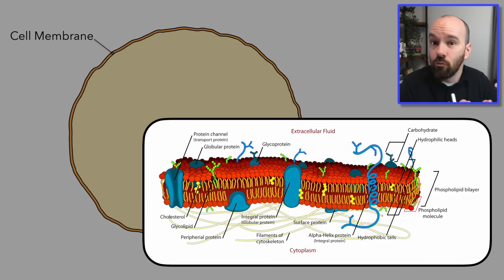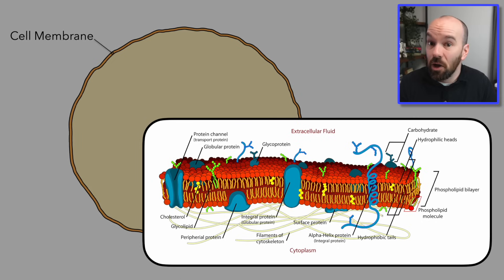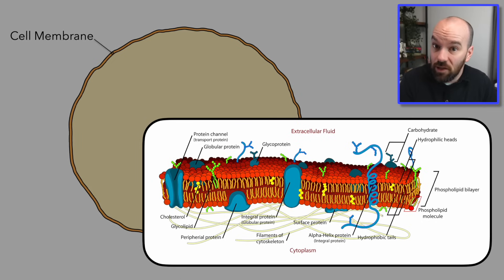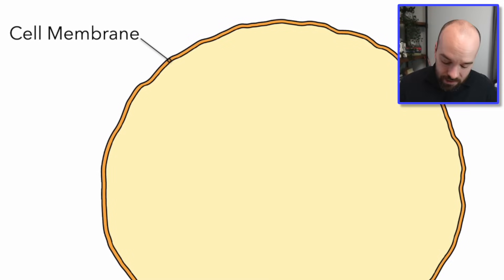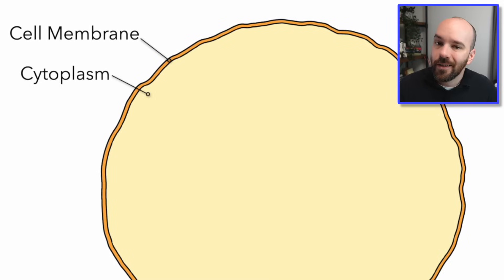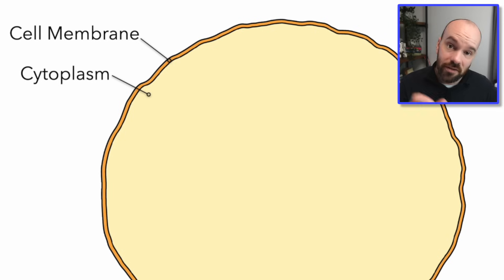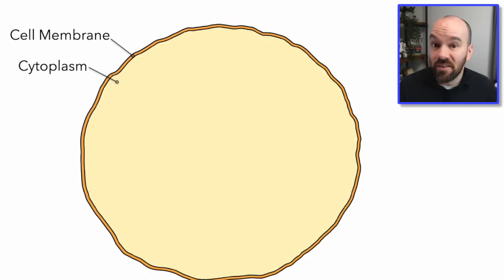If this membrane ever ruptures or breaks, all the fluid and all the stuff of the cell would leave, and that cell would no longer be able to carry out its functions — it would die. Now the stuff inside the cell we call cytoplasm. Cyto just means cell, and plasm just means fluid. So cytoplasm is the cell fluid.